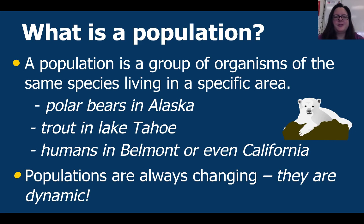So first we need to define what a population is. A population is any group of organisms of the same species living within a particular area. An example of this might be polar bears living in Alaska, trout living in Lake Tahoe, or humans living in Belmont, or even all of California.